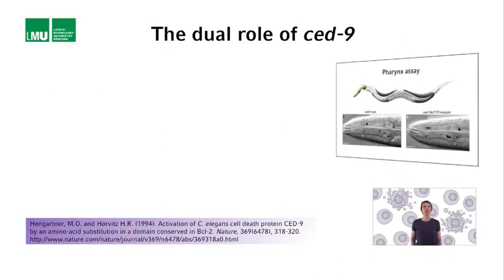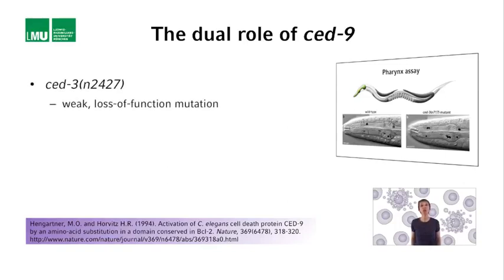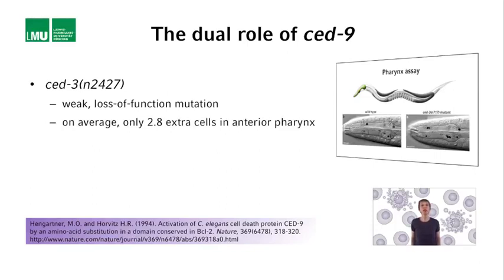Remember the pharynx assay? This is an assay that allows one to detect and also quantify a general defect in apoptosis. Animals homozygous for strong loss-of-function mutations of, for example, the SET3 gene have on average 12 extra cells in the anterior pharynx. At the time SET9 was cloned, many additional SET3 loss-of-function mutations had been identified in various screens, among them also weak loss-of-function mutations such as N2427. In the pharynx assay, N2427 only causes on average 2.8 extra cells.